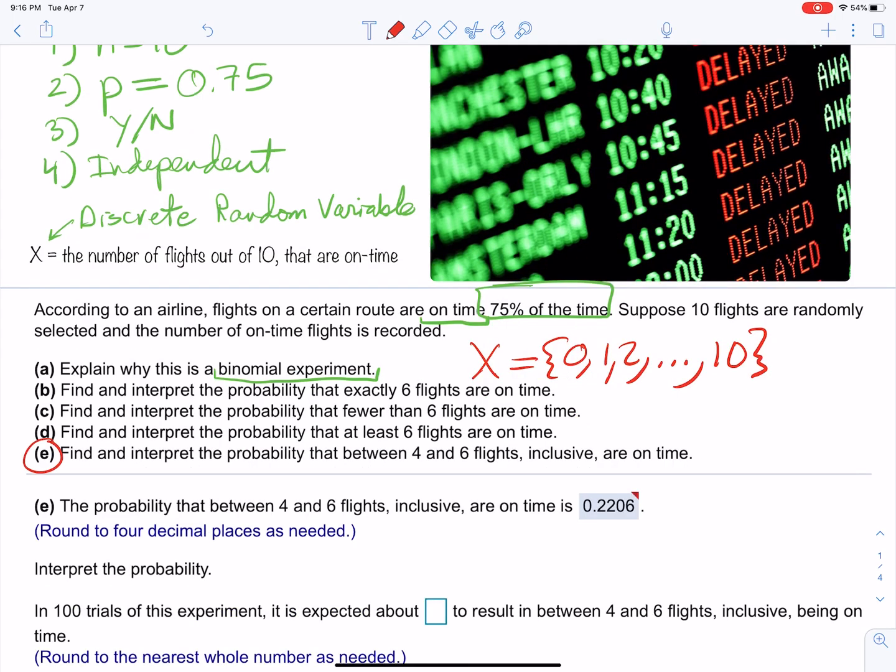Alright, so I want to try part (e). It says find and interpret the probability that between four and six flights, inclusive, are on time. So what does it mean between four and six flights? Well, all that means is four or five or six, and it's inclusive, so we want to include four and six.